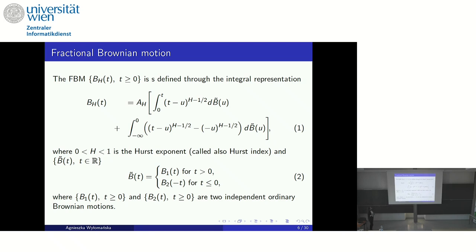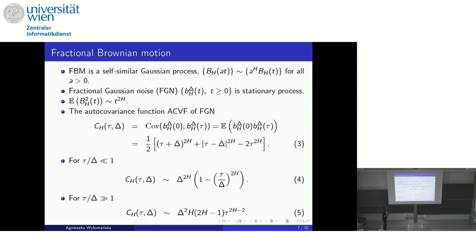Here is the definition of fractional Brownian motion — the integral representation. This definition you also know: it is a self-similar Gaussian process. Self-similarity means scaling, which is important when calculating properties of this process. We often consider fractional Gaussian noise, which is the differences process and is stationary. The second moment of fractional Brownian motion is a power law function, which is why it belongs to the large class of anomalous diffusion processes. We know the form of the autocovariance of the increment process and its asymptotic behavior.